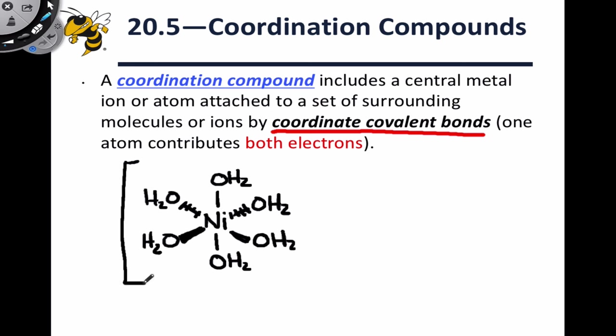The entire complex has a charge of plus two. And we think of each of the bonds within the coordination complex between the non-metal, in this case oxygen, and the metal, the nickel, as involving a pair of electrons from the non-metal atom.